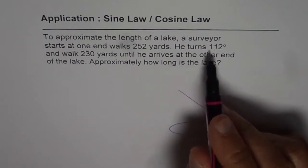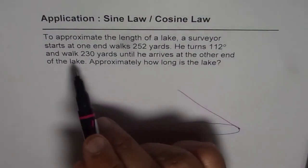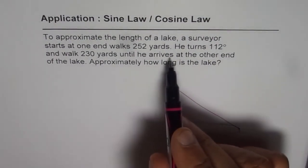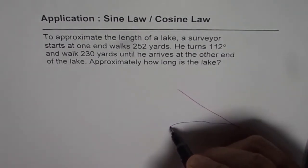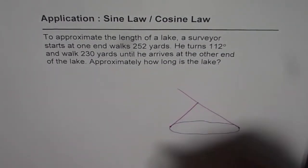And then turns 112 degrees and walks 230 yards until he arrives at the other end. So he has to arrive here. That's the diagram.